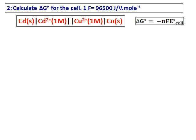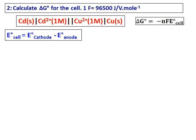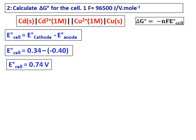So for the given cell, you know that the left hand side is the anode and the right hand side is the cathode. Calculate the E cell using the formula E cathode minus E anode. Get the values from the table and I get the value of the cell as 0.74 volts.